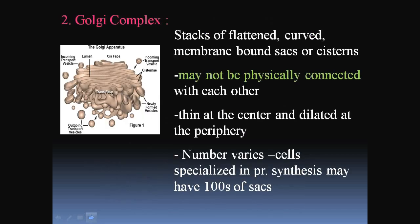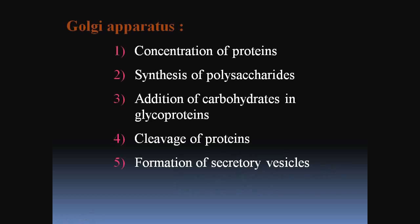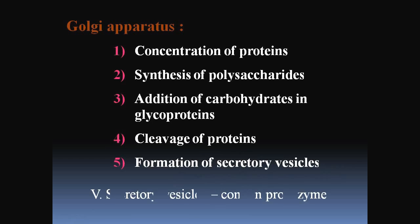The second important organelle is the Golgi complex. These are stacks of flattened curved membrane-bound sacs or cisterns. They may not be physically connected with each other, but are thin at the centre while dilated at the periphery. The numbers may vary within cells. The main functions of the Golgi apparatus are: concentration of proteins, synthesis of polysaccharides, addition of carbohydrates in glycoproteins, cleavage of proteins, and formation of secretory vesicles.